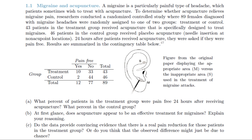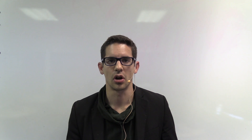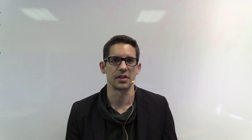The three questions are: first, what percent of patients in the treatment group were pain-free 24 hours after receiving acupuncture, and the same for the control group. Second, at first glance, does acupuncture appear to be an effective treatment for migraines, with reasoning. Third, do the data provide convincing evidence that there is a real pain reduction for patients in the treatment group, or might the observed differences just be due to chance? We'll go through each step by step.